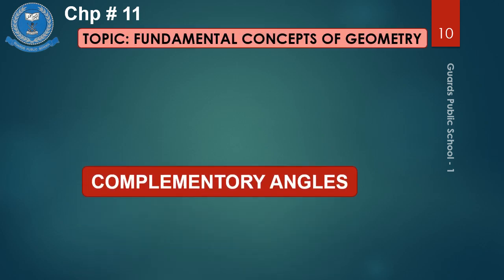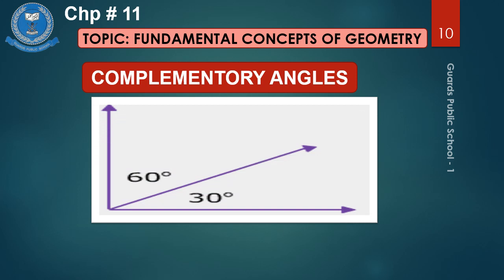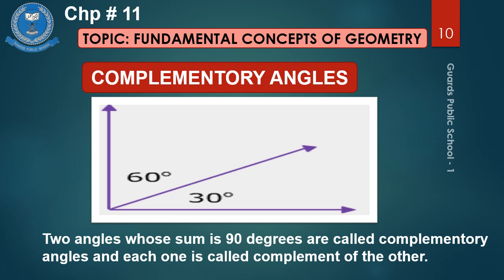Here are complementary angles. You see the diagram — one angle is 60 degrees and one is 30 degrees. Two angles whose sum is 90 degrees are called complementary angles, and each one is called the complement of the other.